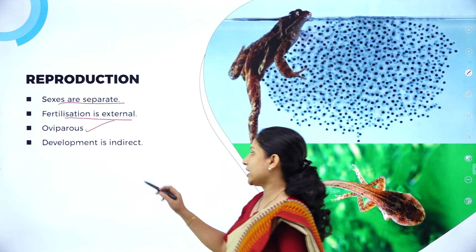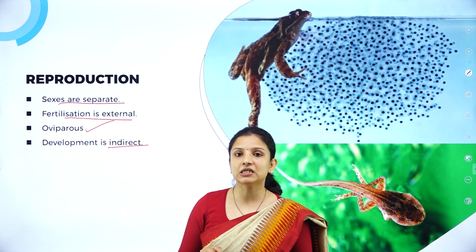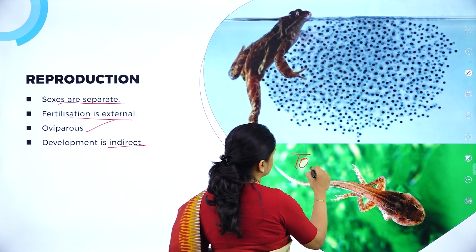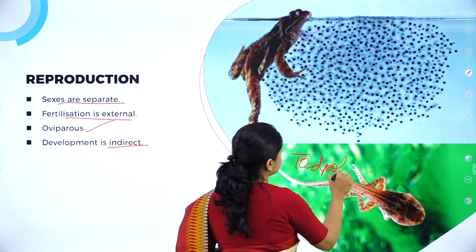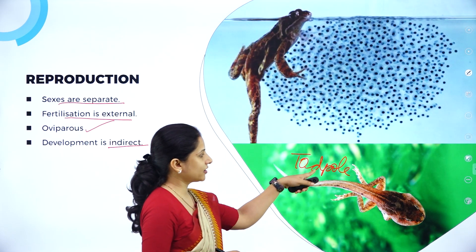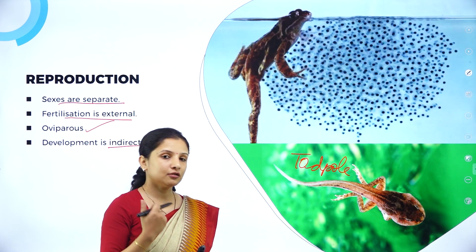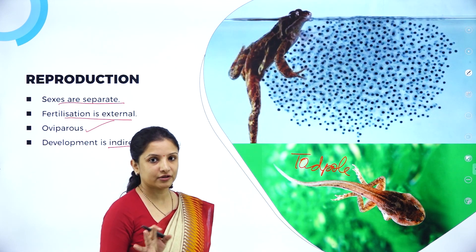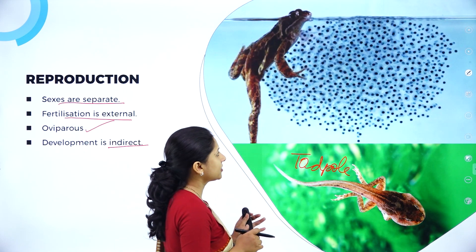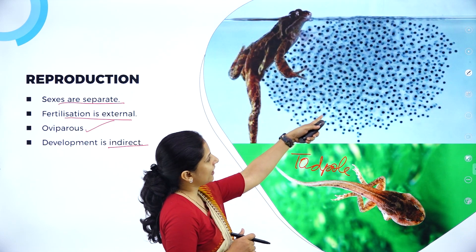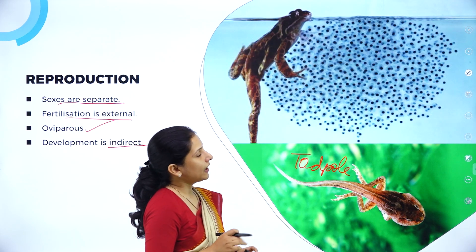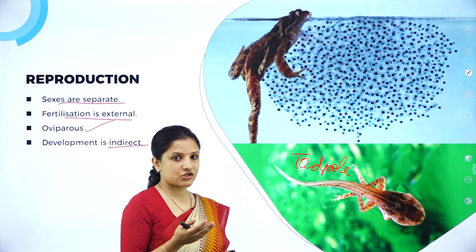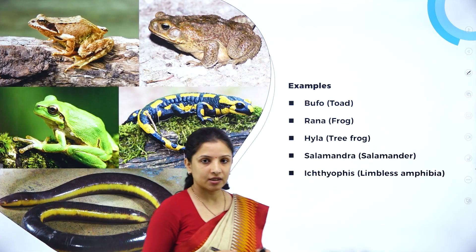Development is indirect because they have an intermediate stage. For example, frogs have an intermediate stage wherein they form a tadpole which does not look like an adult, and then the tadpole becomes an adult frog. Therefore, the development is indirect. They lay the eggs in the water and then fertilization takes place, so fertilization is external.